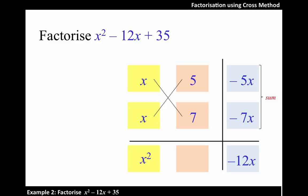Now, looking backwards. How do we get -5x? It means it's actually x times -5 to result in -5x. Similarly, to get -7x, we have x times -7.